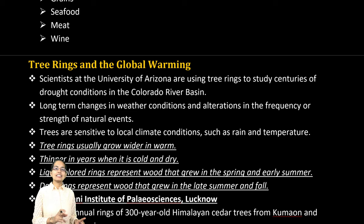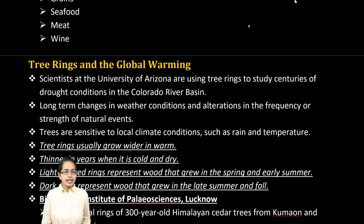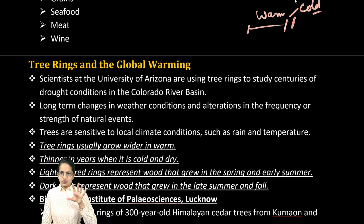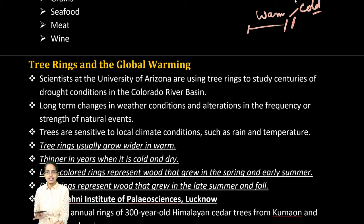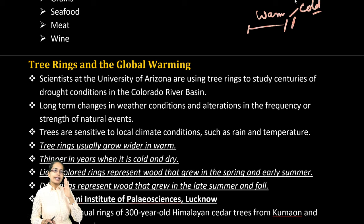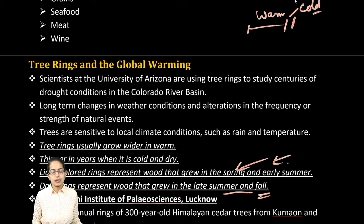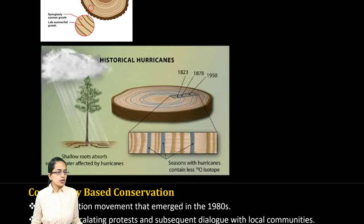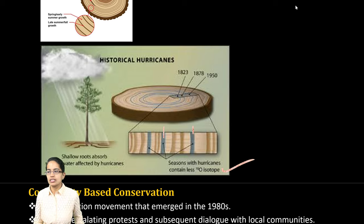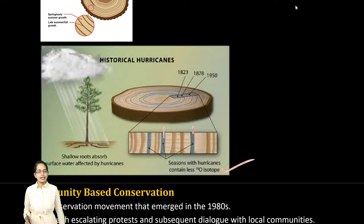Tree rings are useful for understanding global warming and climate change. Wider rings indicate warm months; thinner rings indicate cold months. Based on the rings, you can understand how much global warming has taken place. There is also a difference in color — dark colors are seen during late summer and fall, while light color rings are seen in spring and early summer. Looking at historical hurricanes, sections with fewer oxygen isotopes indicate seasons when hurricanes occurred.